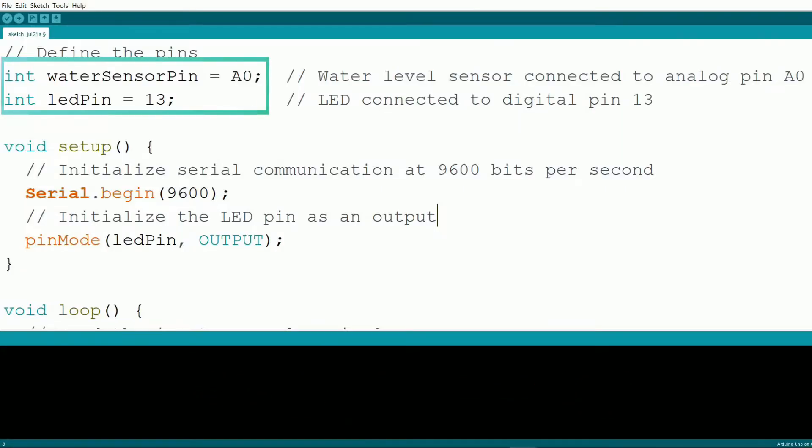First, we define the pins. The water level sensor is connected to analog pin A0 and the LED is connected to digital pin 13. In the setup function, we initialize the serial communication at a baud rate of 9600 and set the LED pin as an output.